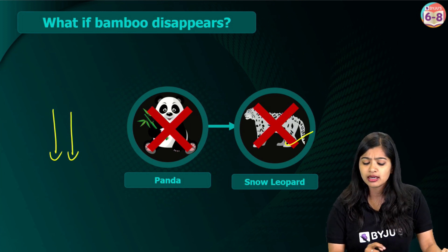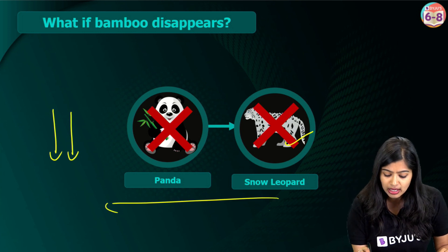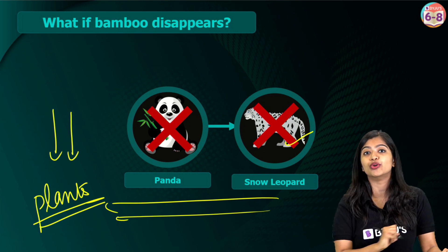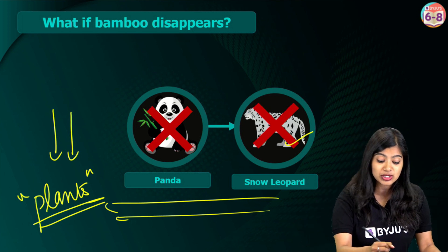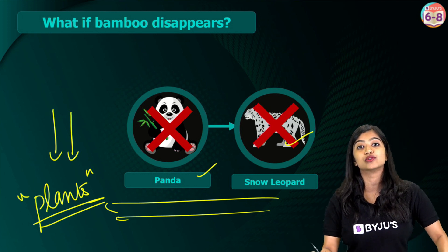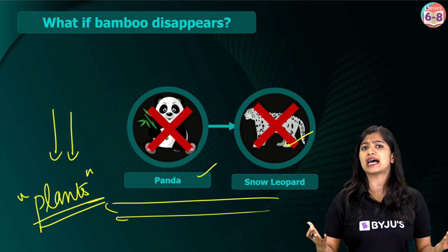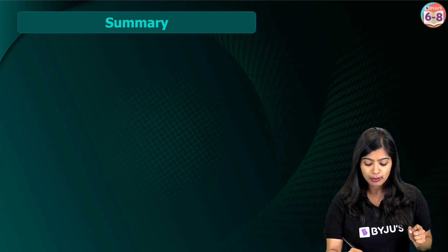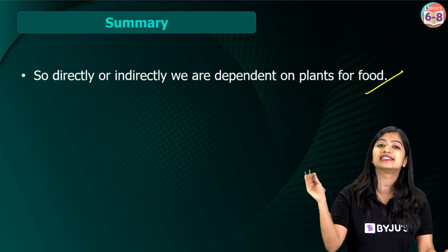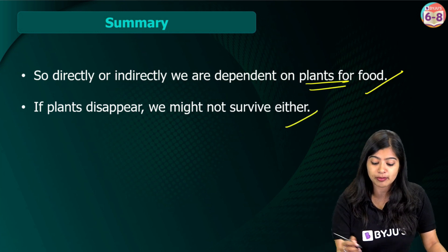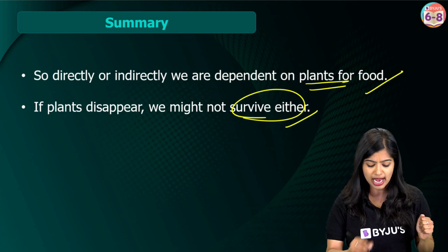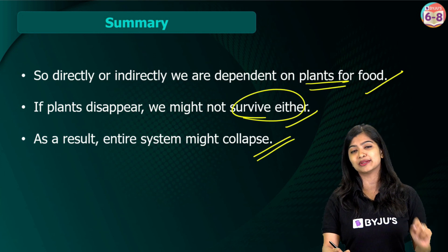This shows that directly or indirectly, all animals are dependent on plants for food. It is important that plants are available. As the number of plants decreased, the population of pandas decreased too, which disrupted the balance in the environment. So when we ask ourselves: what if plants were not there? We know this would ultimately disrupt balance, because all organisms are directly or indirectly dependent on plants for food. If plants disappear, we might not be able to survive — and that goes for all animals. It disrupts the entire system.